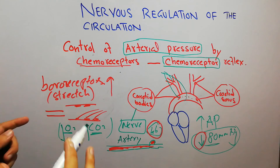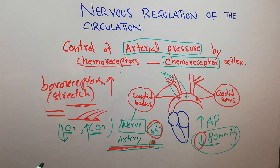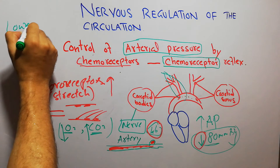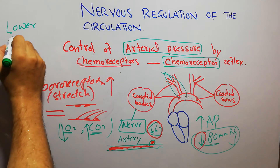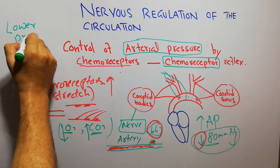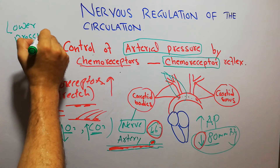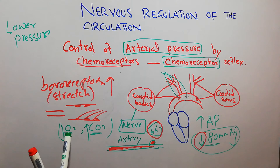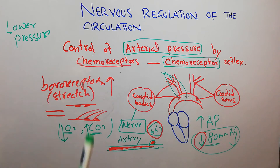Chemoreceptors are most active when the arterial pressure has fallen below the 80 mmHg level. They act at low pressure and are not very important at high pressure, because at high pressure the level of oxygen is normal and the level of carbon dioxide is normal.